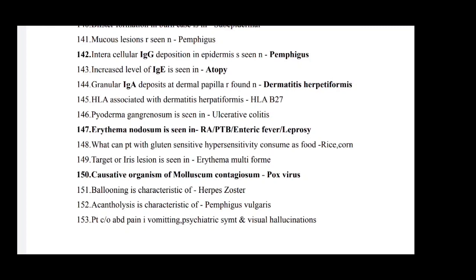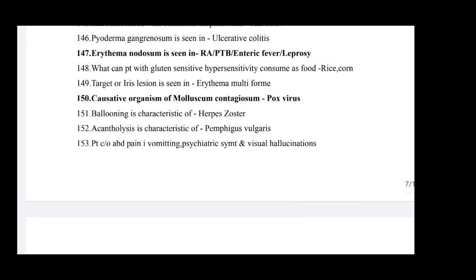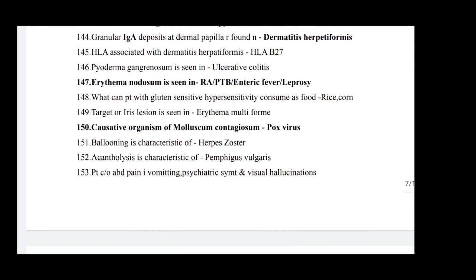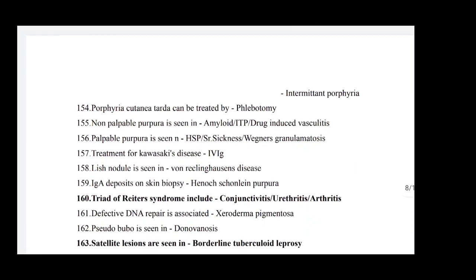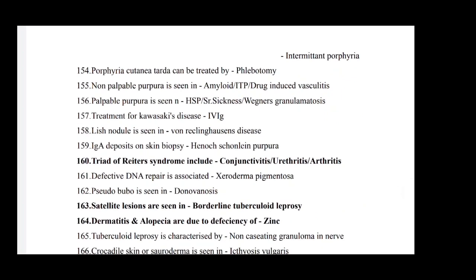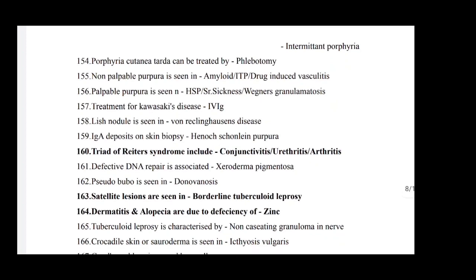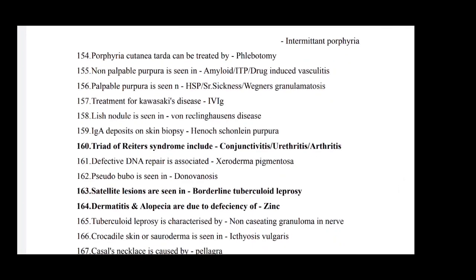Granular IgA deposited at dermal papilla is found in dermatitis herpetiformis. HLA associated with dermatitis herpetiformis is HLA-B27. Pyoderma gangrenosum is seen in ulcerative colitis. Erythema nodosum is seen in rheumatoid arthritis, PAN, enteric fever, and leprosy. Patient with gluten sensitivity can consume rice and corn. Target iris lesion is seen in erythema multiforme. Causative organism of molluscum contagiosum is poxvirus. Ballooning is characteristic of herpes zoster. Acantholysis is characteristic of pemphigus vulgaris.